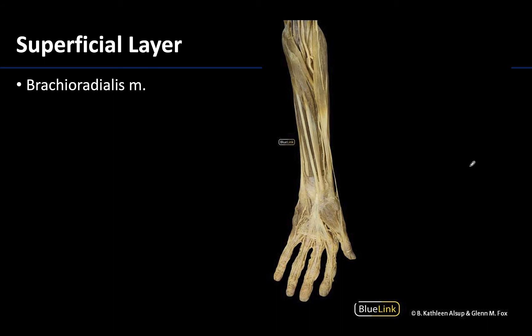This seems a bit off — I just told you we are discussing the posterior compartment of the forearm, but this is clearly an anterior view. The reason I have this view up is because we have to talk about the oddball of the posterior compartment: the brachioradialis muscle. It is very prominently seen from an anterior view on the lateral side. Its tendon does not reach the wrist, so its primary actions occur at the elbow joint, not the more distal joints of the wrist and hand like most muscles of the anterior and posterior compartments.